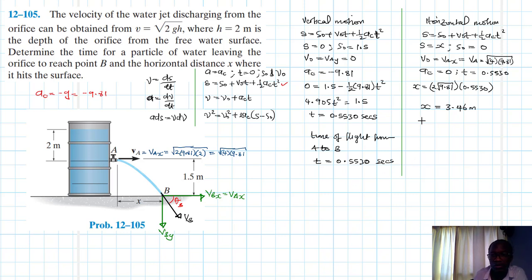Okay, so our horizontal distance, our horizontal distance x we said is equal to 3.46 meters. I guess we are done. So we found the time of flight from A to B of the water particle, we've also found horizontal distance x.